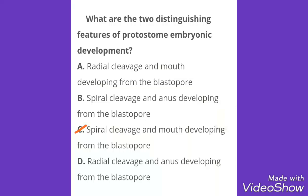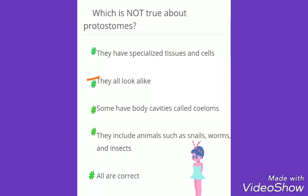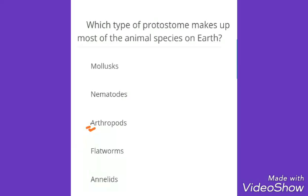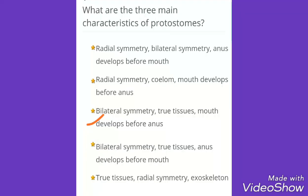Now I have some multiple choice questions on protostomes and deuterostomes. What are the two distinguishing features of protostome embryonic development? The answer is spiral and determinate cleavage. Which type of protostome makes up most of the animal species on earth? The answer is arthropods. What are the three main characteristics of protostomes? These are bilateral symmetry and true tissues, mouth develops before anus.